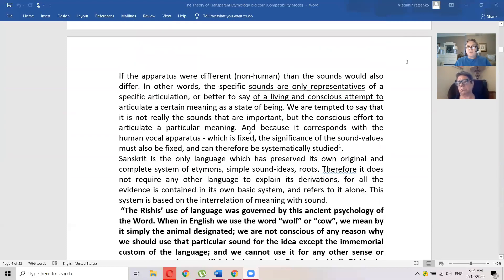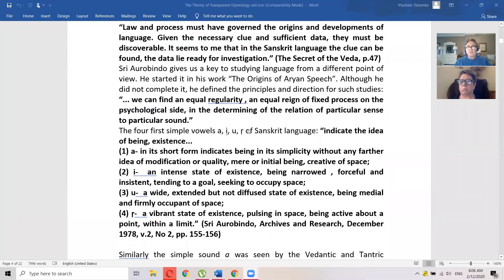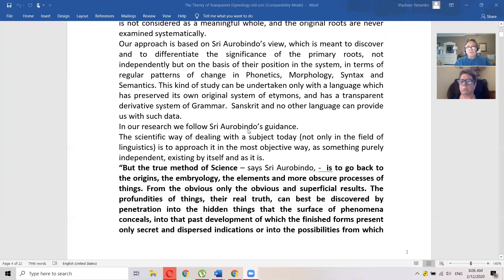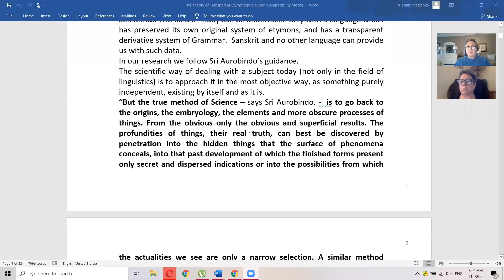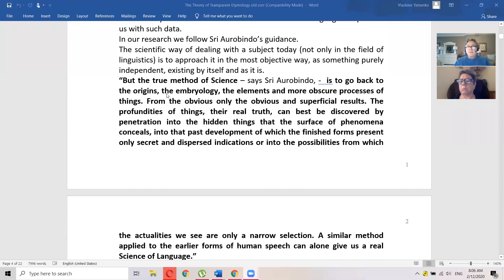In that sense, of course, these quotations we should have been to give from his secret of the Veda are very important for us. So to establish this understanding of etymology, we have to go to embryology of language. And that's what he says here, the true method of science is to go back to the origins, the embryology, the elements and more obscure processes of things from the obvious.